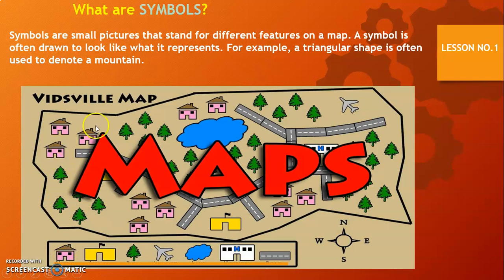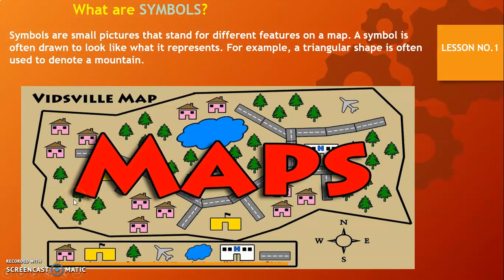In this Virzuela map, all of these are small drawings and all of these small drawings are called symbols. This symbol represents a home — these are the homes in the Virzuela map. This yellow symbol represents a school. This symbol represents a tree. This symbol represents an arrow plane, that is a point. This symbol represents a lake — there is a lake. This symbol represents a hospital. And this symbol represents a road — this is the road on the Virzuela map.